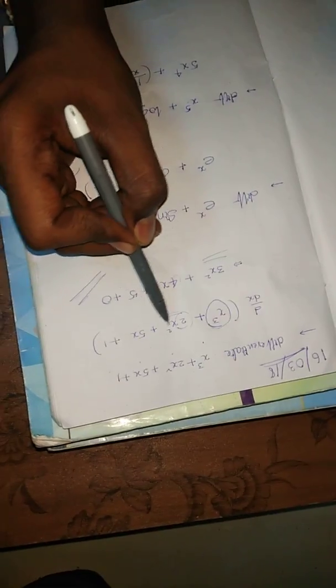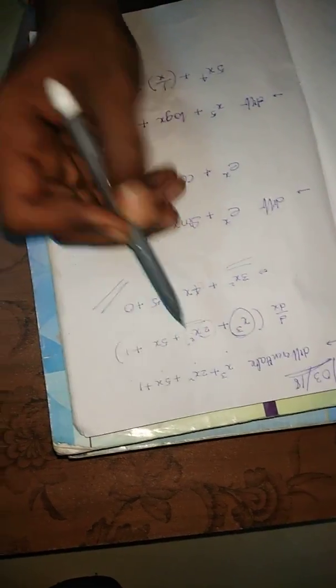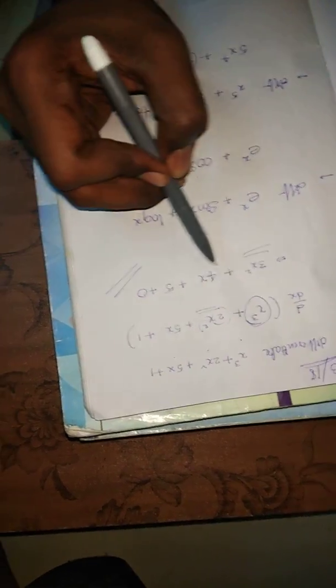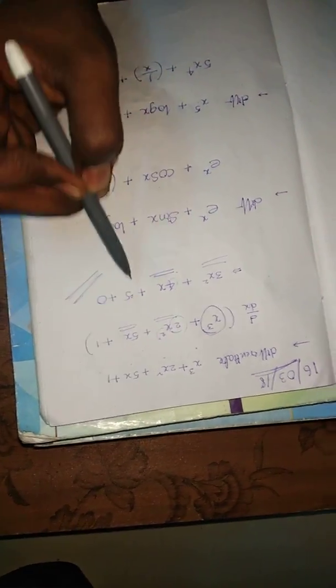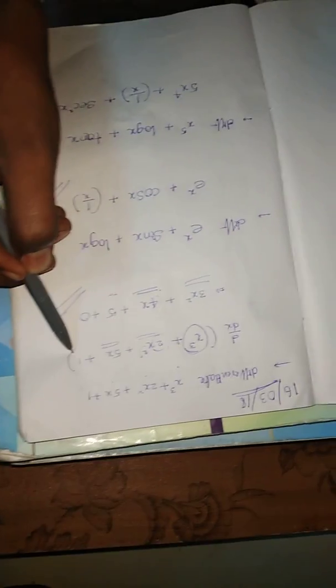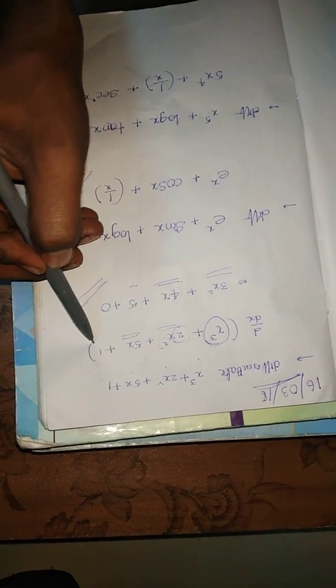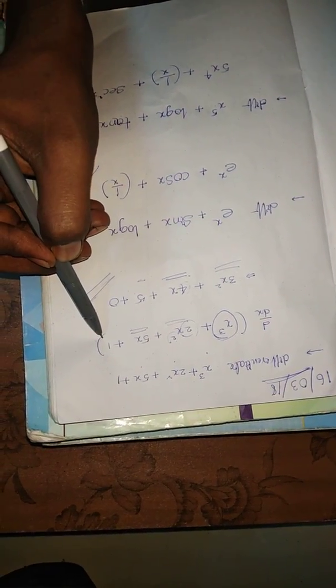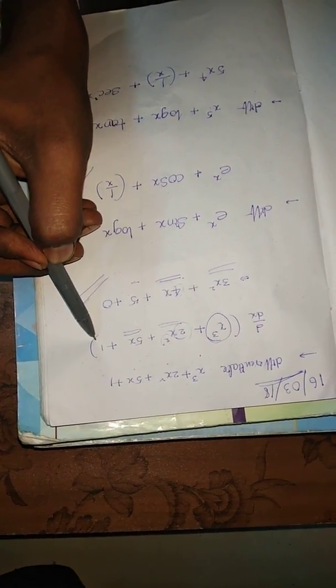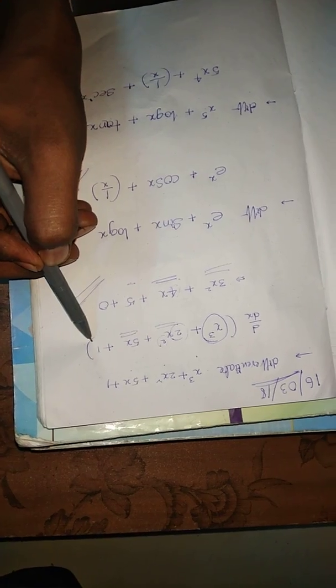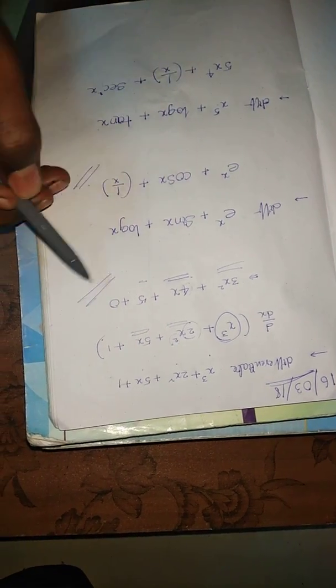For 5x, the derivative is 5. For the constant 1, differentiating a constant always gives 0. So the answer is 3x² + 4x + 5. We have learned this formula now. Next.